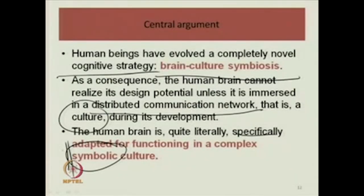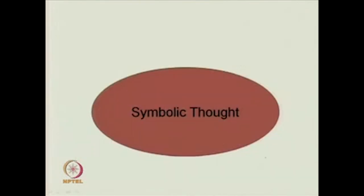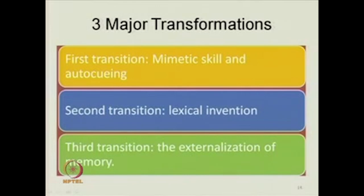Let us read again: the human brain is quite literally specifically adapted for functioning in a complex symbolic culture. So as I said, symbolic thought is something that has allowed us to have very complex culture, very complex forms of knowledge, beginning with the alphabet and number systems. This work by Merlin Donald about the story of the origin of the modern mind hinges itself on three major transformations. He declares this at the beginning and says that this entire development through a brain-culture symbiosis has to be seen under three major transformations throughout prehistory and history.